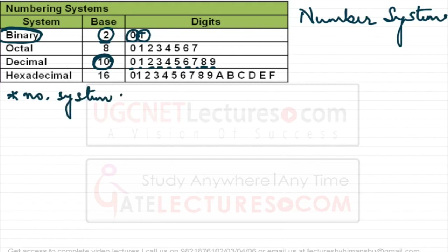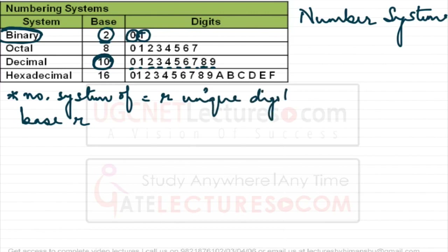Those unique symbols range from 0 to R minus 1. In binary, base is 2, so it has two unique symbols: 0 and 1. Note that 1 equals 2 minus 1, confirming the rule.